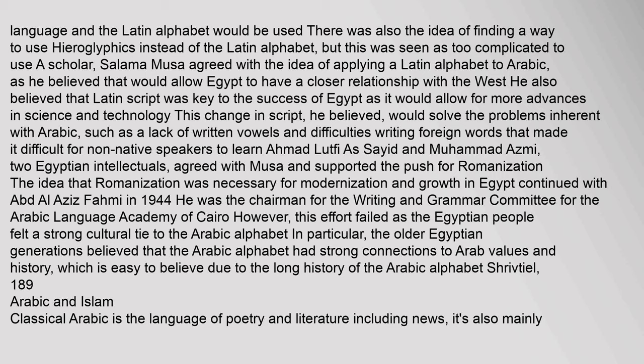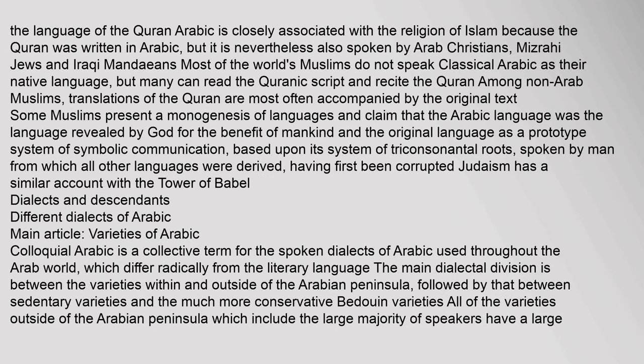Classical Arabic is the language of poetry and literature, and also the language of the Quran. Arabic is closely associated with the religion of Islam because the Quran was written in Arabic, but it is nevertheless also spoken by Arab Christians, Mizrahi Jews, and Iraqi Mandaeans. Most of the world's Muslims do not speak Classical Arabic as their native language, but many can read the Quranic script and recite the Quran. Some Muslims claim that Arabic was the language revealed by God for the benefit of mankind, based upon its system of triconsonantal roots.